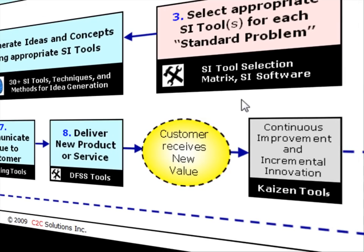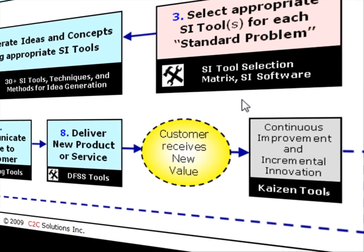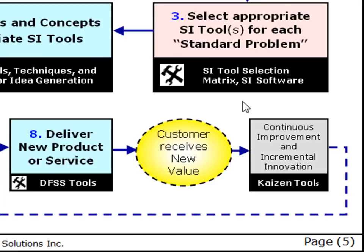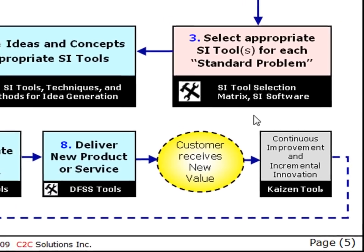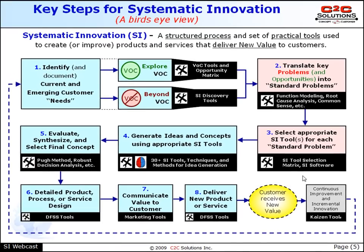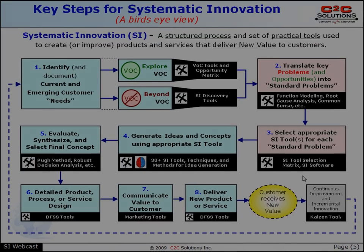After all these steps, the end customer now receives the new value, and with any new offering, time must be spent on continuous improvement and refinement of the product we just delivered. So the process repeats at a continuous improvement level until the product is retired.